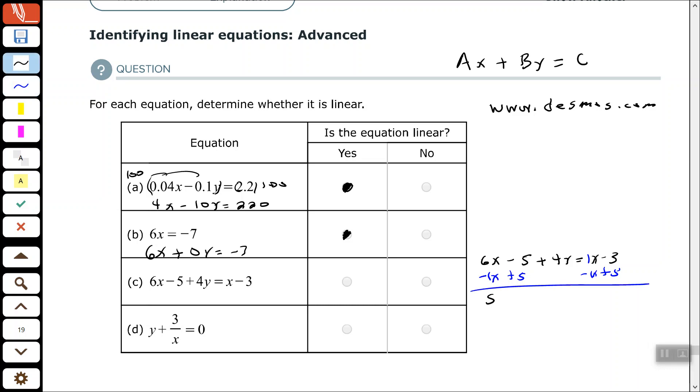So, 6x minus 1x is 5x plus 4y equals 2. So, again, that fits the form of a standard equation of a line. Yes,